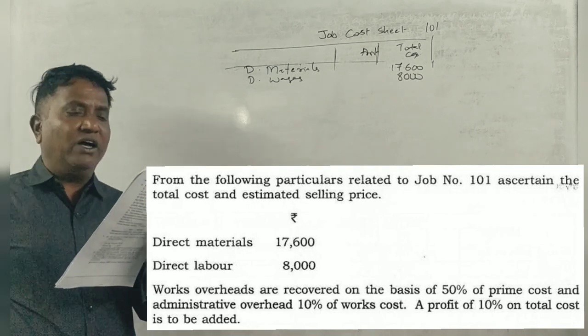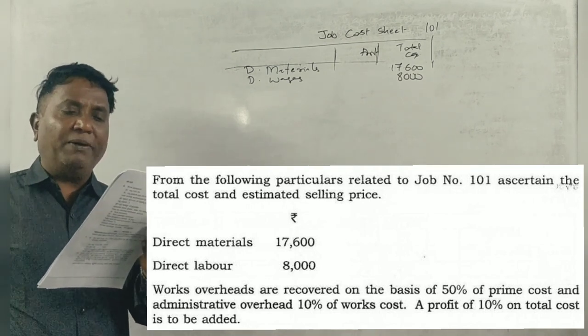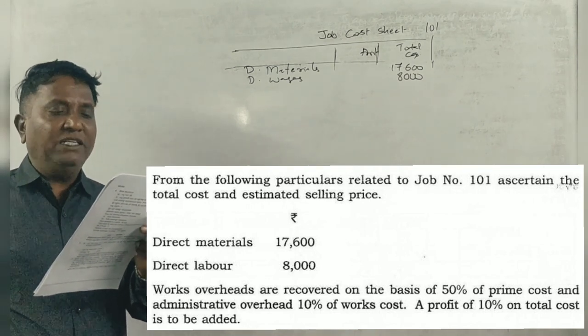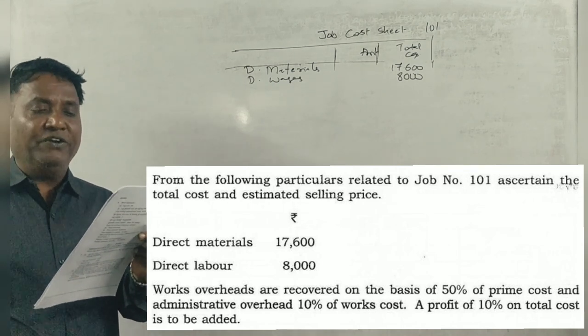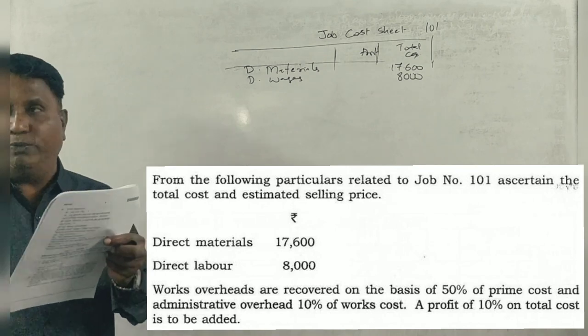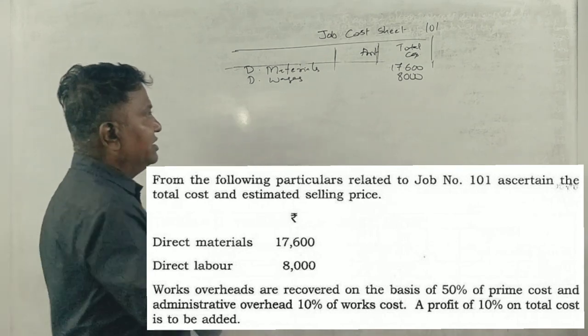Works overheads are recovered on the basis of 50% of prime cost. Administration overhead: 10% of works cost. A profit of 20% on total cost is to be added. This is a simple question.